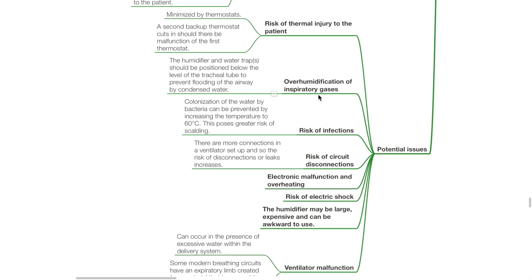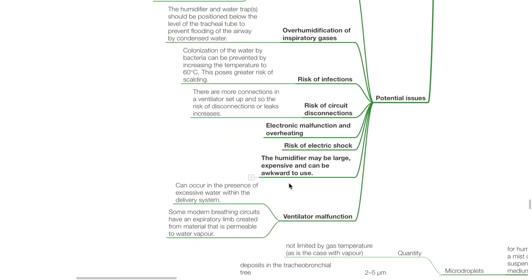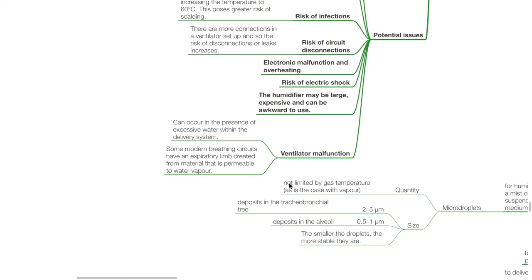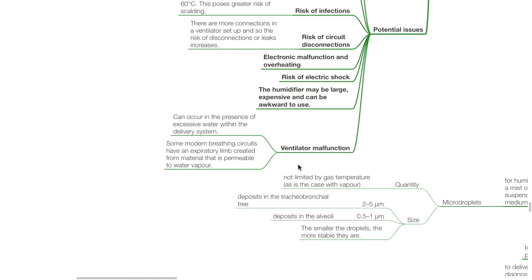Potential issues of the hot water bath humidifier: risk of thermal injury to the patient — minimized by thermostats; a second backup thermostat cuts in on malfunction of the first. Overhumidification of inspiratory gases. The humidifier and water traps should be positioned below the level of the tracheal tube to prevent flooding of the airway. Risk of infections: colonization of the water by bacteria can be prevented by increasing temperature to 60°C, though this poses a greater risk for thermal injury. Other risks include: circuit disconnections, electronic malfunction and overheating, risk of electric shock, the humidifier may be large, expensive and awkward to use, and ventilator malfunction can occur in the presence of excessive water within the delivery system.